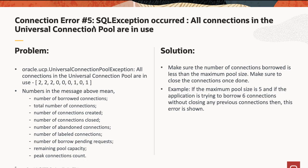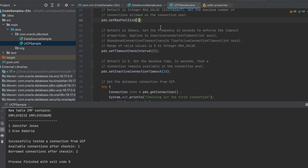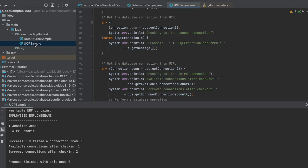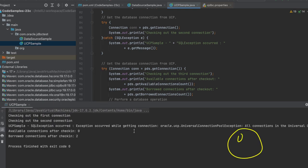The fifth connection error is related to UCP. The exception shows: all connections in the universal connection pool are in use. This occurs when the number of connections you are trying to borrow is more than the maximum pool size. For example, if the maximum pool size is five and the application is trying to borrow six connections without closing any previous connections, then this exception occurs. To simulate this error, let's set the maximum pool size to two and try to borrow three connections. You can see we are checking out the first connection, second connection, and the third connection. Let's compile and run — you can see the exception here.